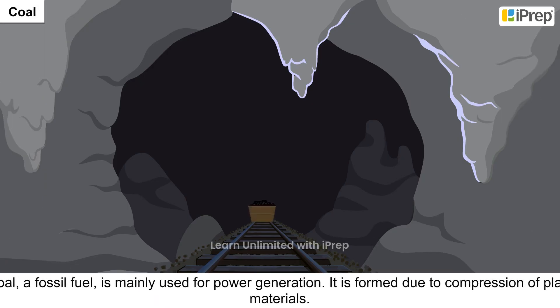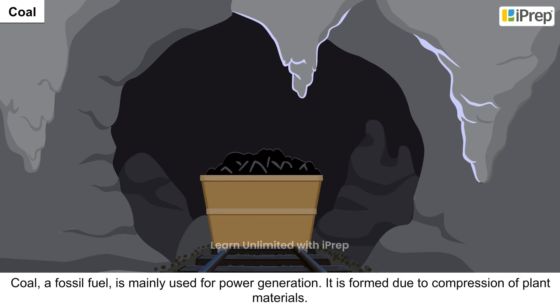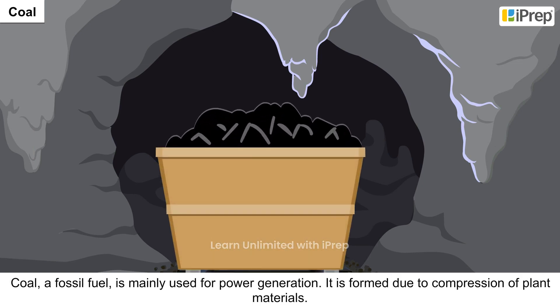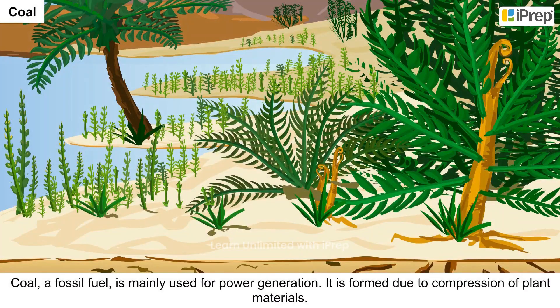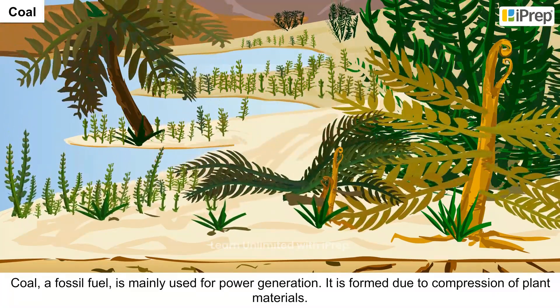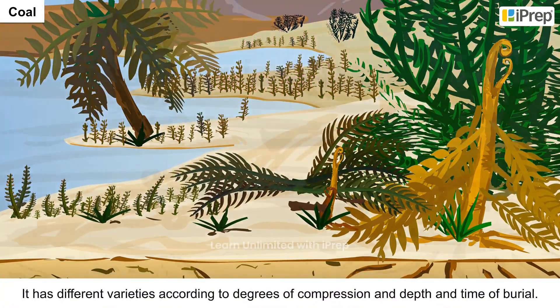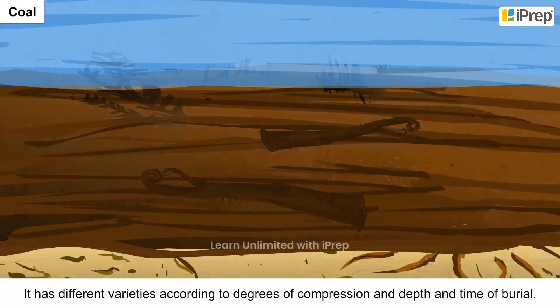Coal. Coal, a fossil fuel, is mainly used for power generation. It is formed due to compression of plant materials. It has different varieties according to degrees of compression and depth and time of burial.